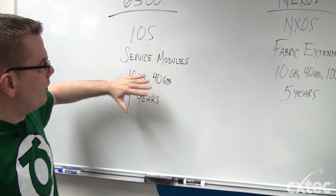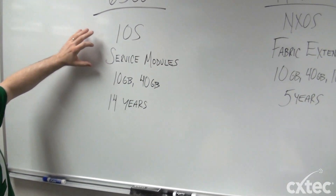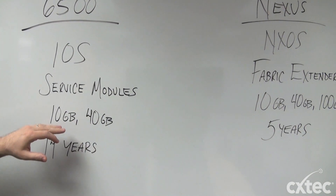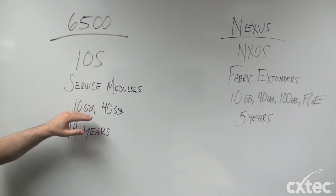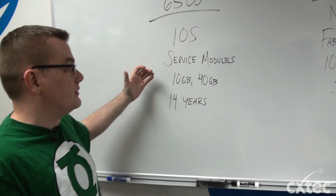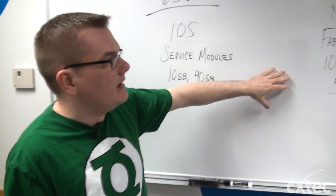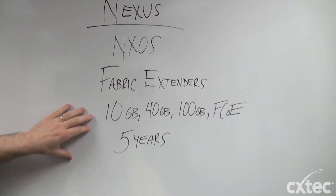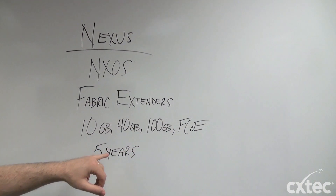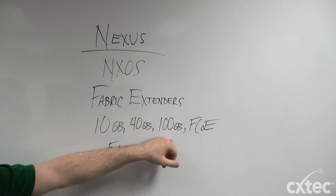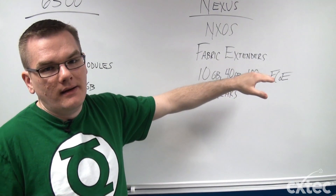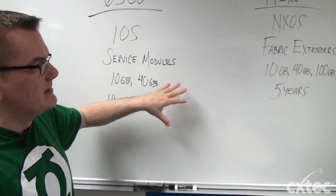The third point is high-speed interfaces. The 6500 supports 10 gig and 40 gig interfaces. While it can't do loads of 10 gig, it can support 4, 8, and 16 port 10 gig modules, which is huge, and 40 gig is coming on the horizon. The Nexus, of course, can do lots of 10 gig. It can also support 40 gig and even 100 gig, which the 6500 at this point cannot do and probably will not — although that remains to be seen. And then also fiber channel, so it has a lot of really high-speed data interfaces, which differentiates it.